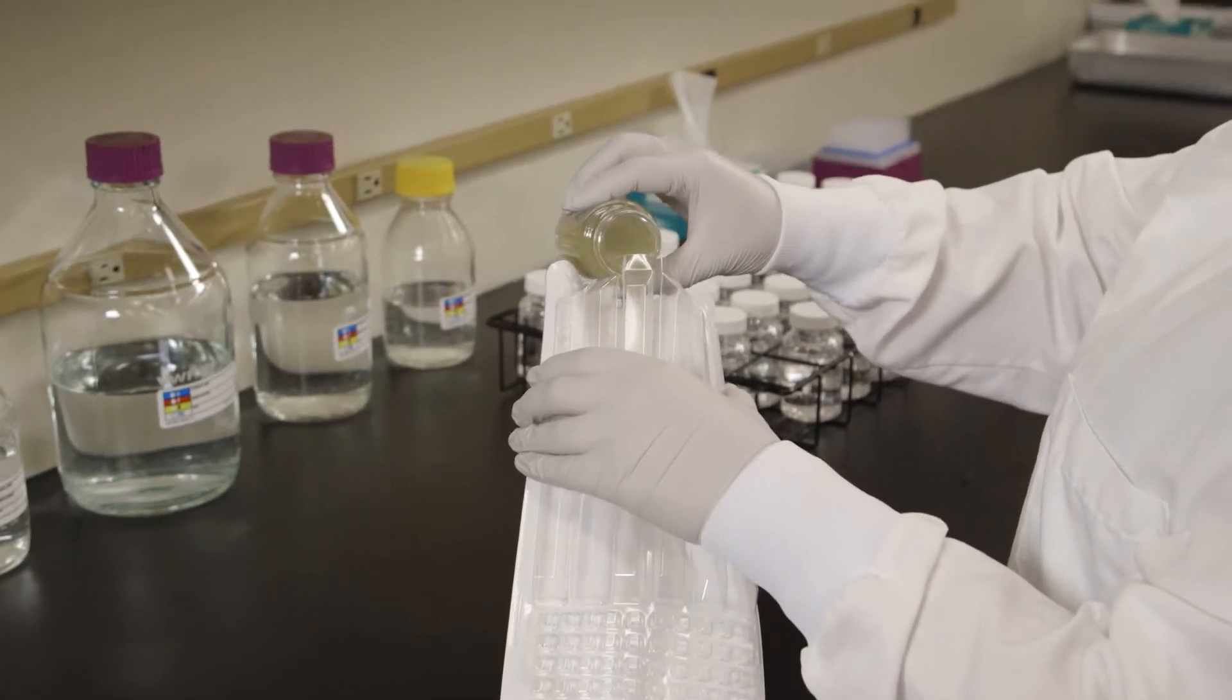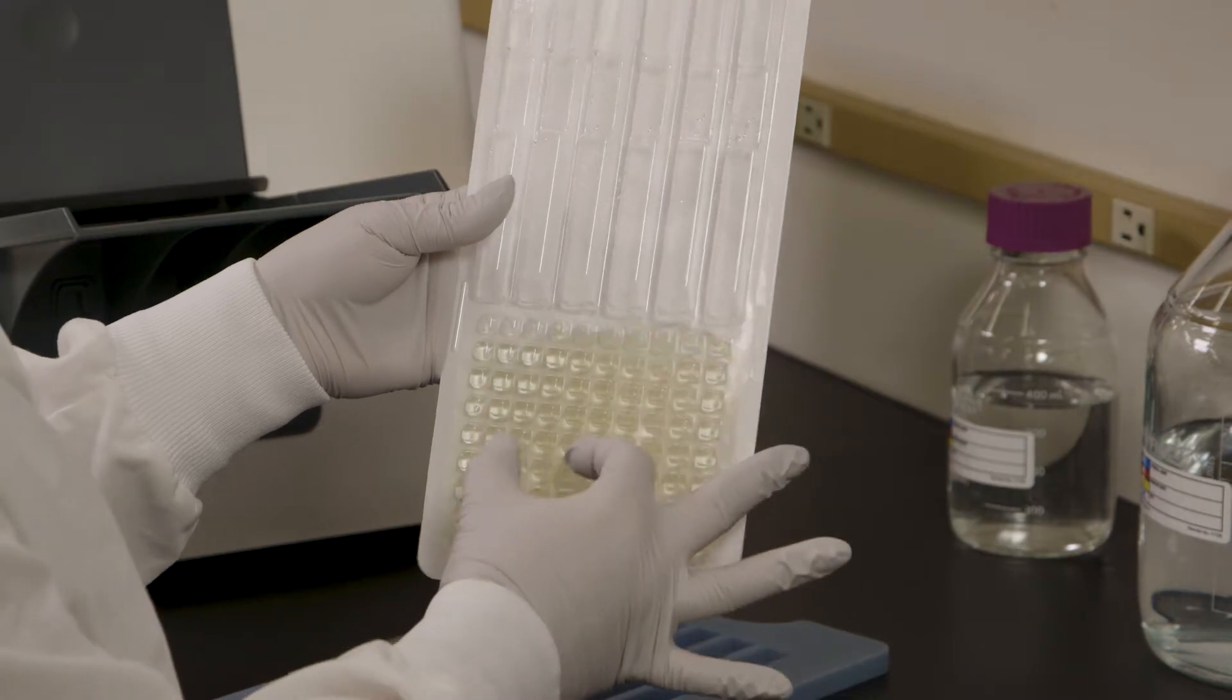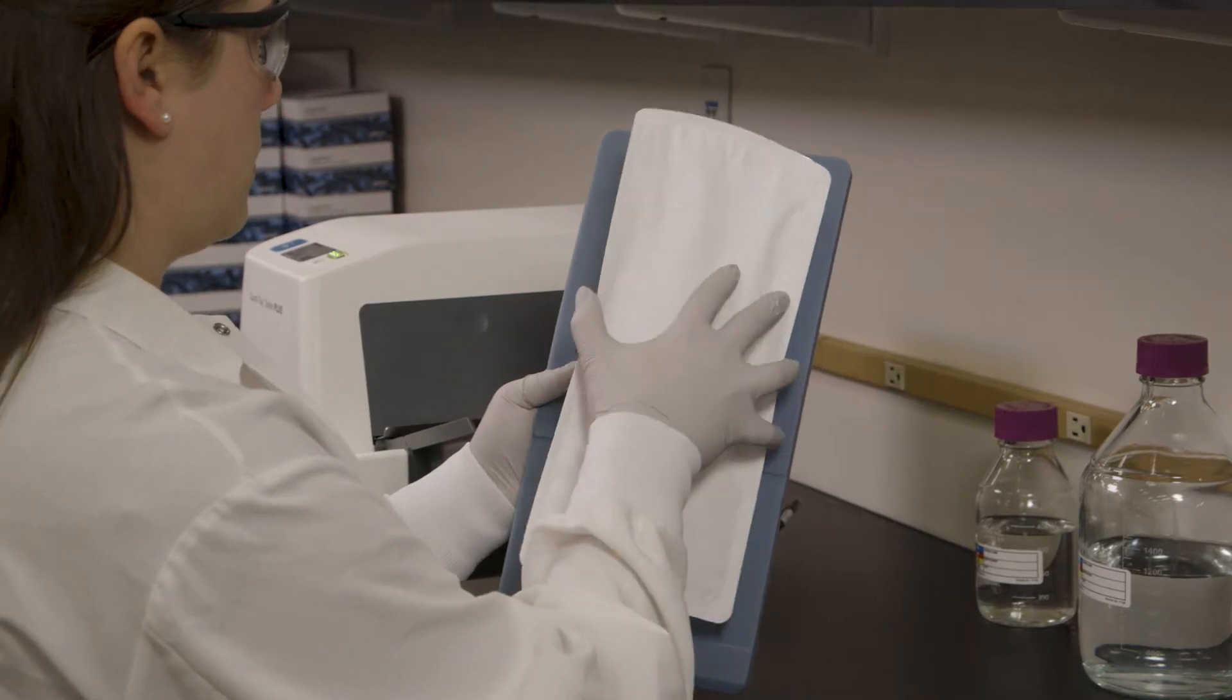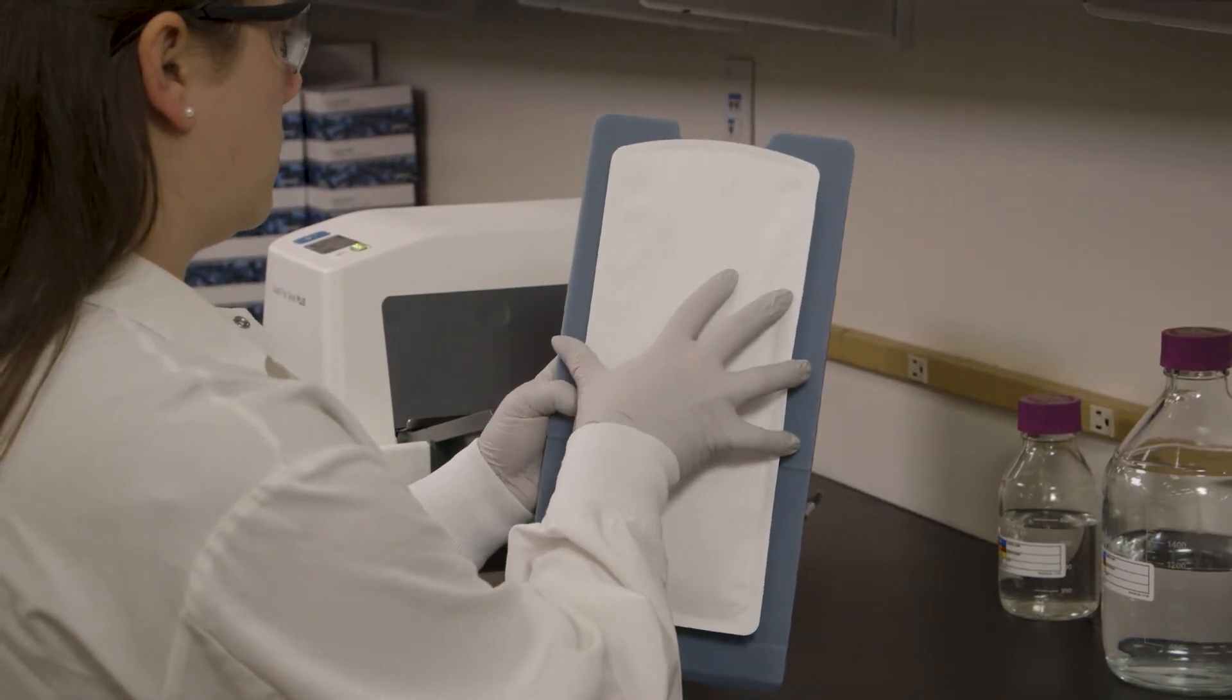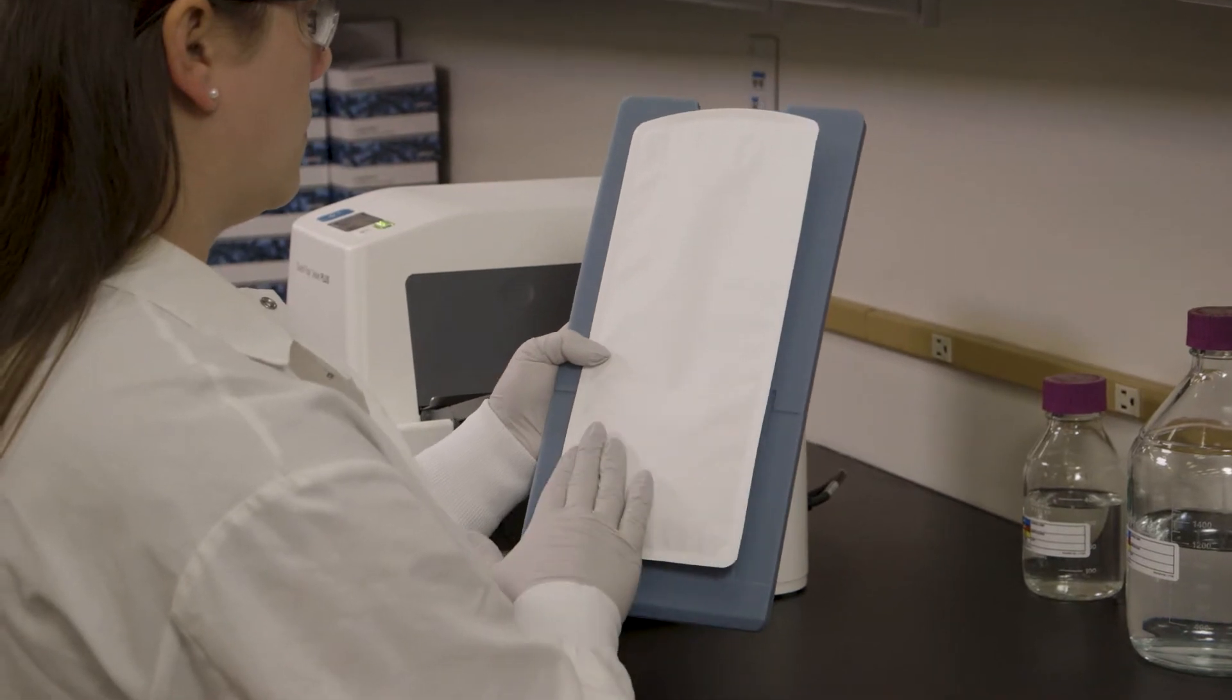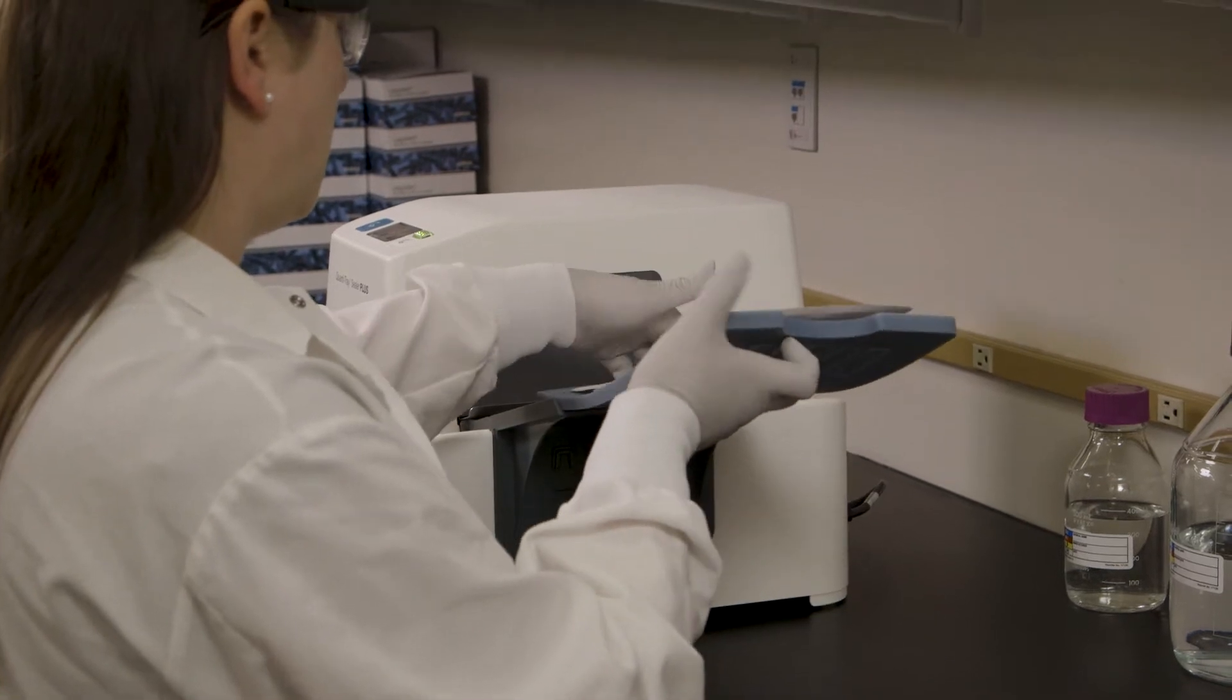Aseptically pour the sample mixture into the tray. Tap or flick the tray to remove air bubbles. Immediately place the filled tray on the rubber insert, making sure each well fits its corresponding hole. Push the insert with tray into the sealer until the sealer grabs the tray and pulls it into the slot.